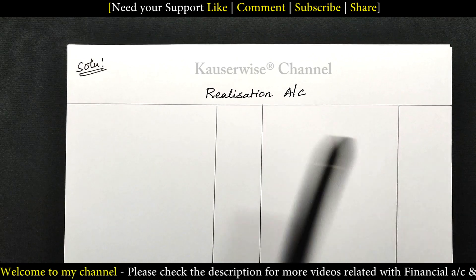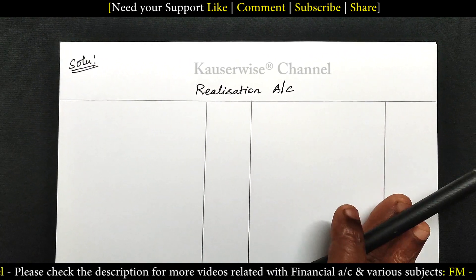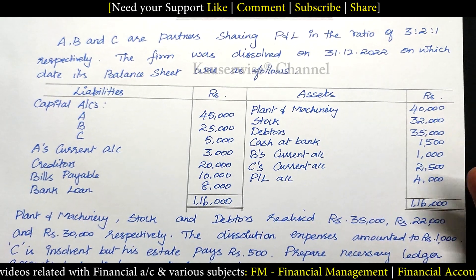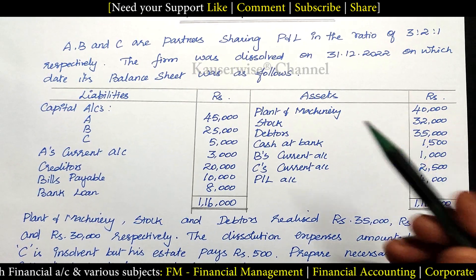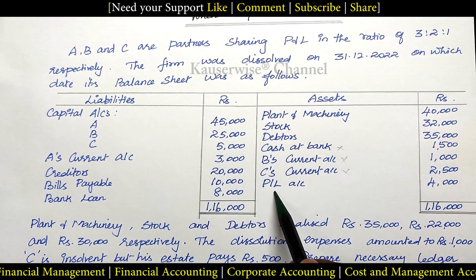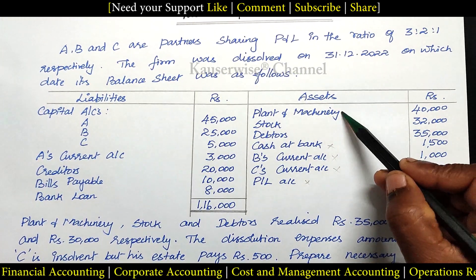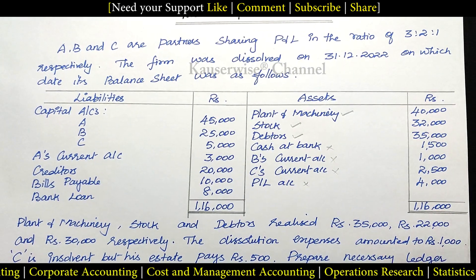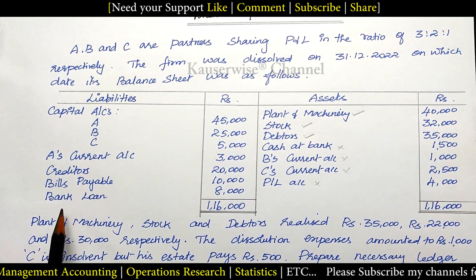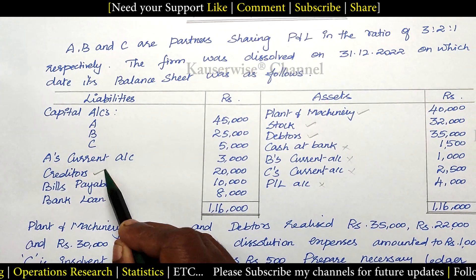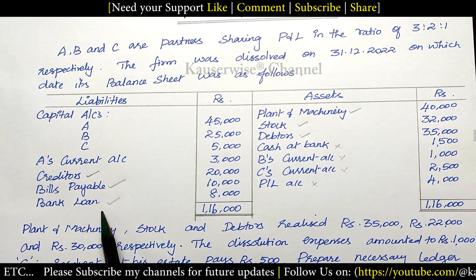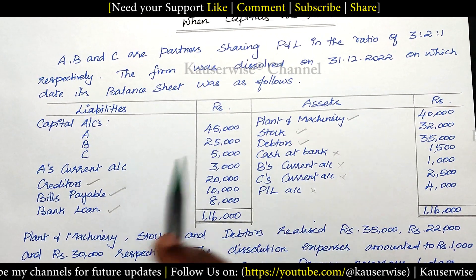The first step is to transfer all the assets and all the liabilities and provisions to the realization account. We need to transfer all assets except three things: cash or bank balance, any capital or current account debit balance, and profit and loss debit balance. Except these, we transfer all other assets — plant and machinery, stock, and debtors. Similarly, we transfer all third-party liabilities: creditors, bills payable, and bank loan — to the realization account debit side and credit side.